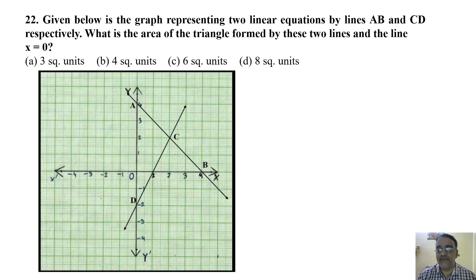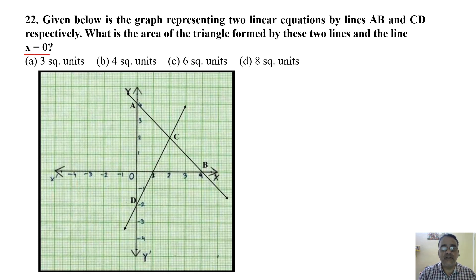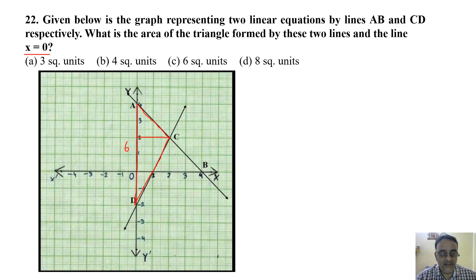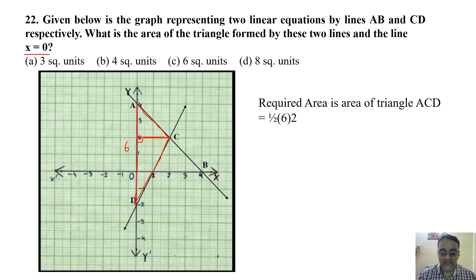Question 22: Area of the triangle formed by two lines AB and CD and the line x=0 (the Y-axis). From the graph, the base along the Y-axis is 6 units and the altitude (horizontal distance) is 2 units. Area = ½ × base × height = ½ × 6 × 2 = 6 square units. The correct answer is option C.